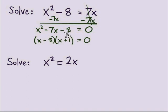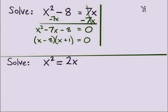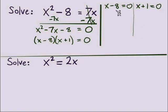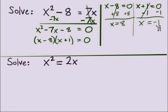With a leading coefficient of 1, we factor by finding a pair of numbers that multiply to negative 8 and add to negative 7. That pair is negative 8 and positive 1. Splitting into two linear equations: x minus 8 equals 0 and x plus 1 equals 0. Adding 8 to each side gives x equals 8. Subtracting 1 from each side gives x equals negative 1. Our two solutions are 8 and negative 1.